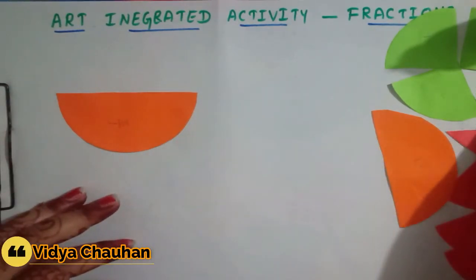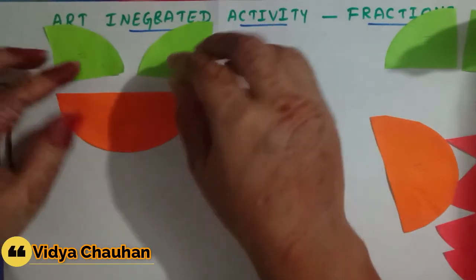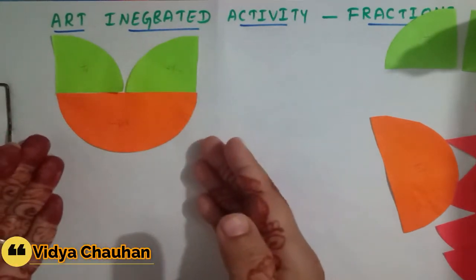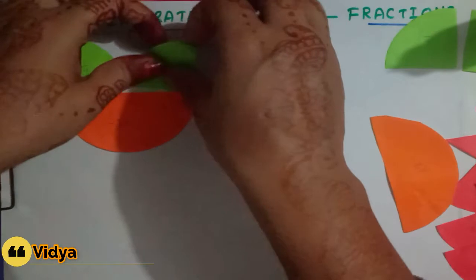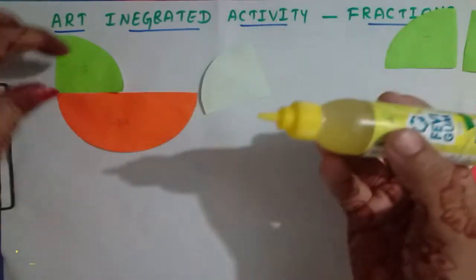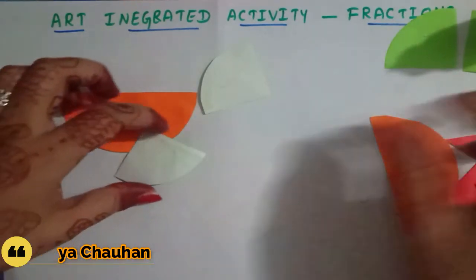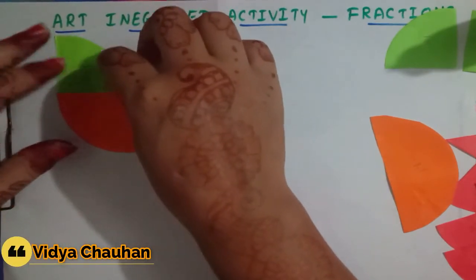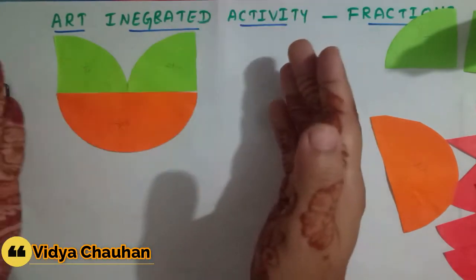For the rest of the flower, I will use two portions of one fourth and paste them like this. Children, can you see — we got a flower bud! Maths is so beautiful that we can draw and make anything using mathematical concepts, even in art. I have pasted one of the one-fourth pieces and now will paste the other part.